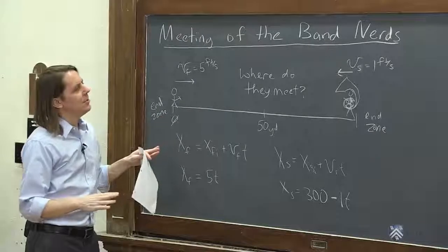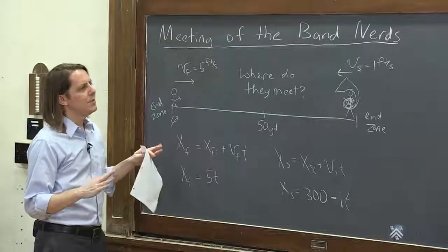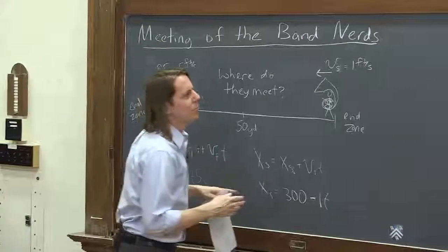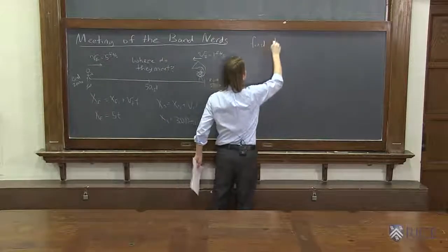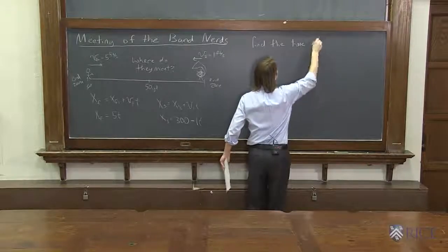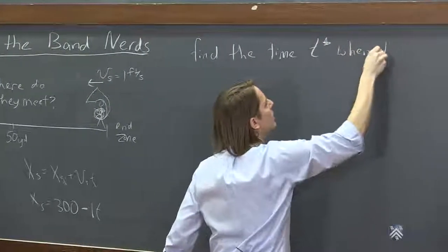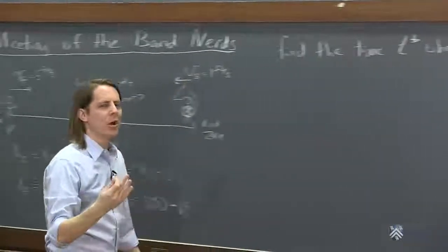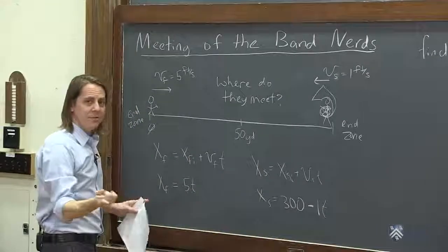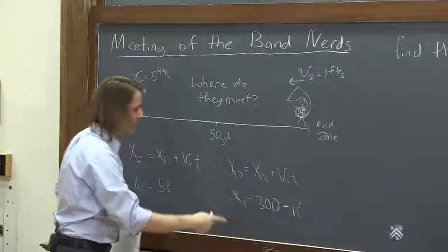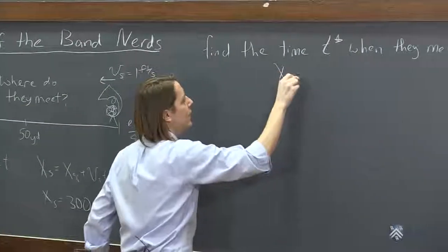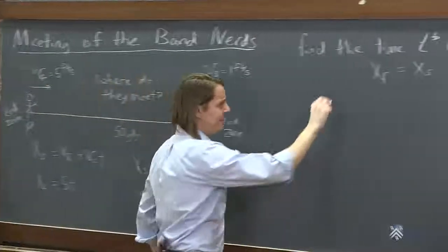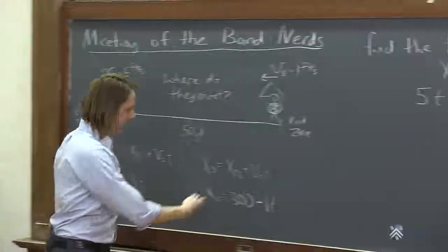So when you want two things to meet, you've got to think about what's going to happen. When they meet, they're going to have the same position at a certain time. So the way I would probably start this problem is to say, find the time, the time I'll call it t star, when they meet. And you've got to figure out what is the mathematical requirement that they meet. It's that they're at the same position. It's that xf equals xs. So when they meet, the fast person's position will equal the slow person's position. So we can say that's going to happen when 5t equals 300 minus t.